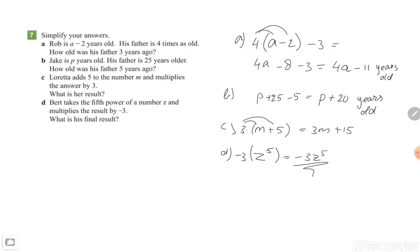So start always with the number, in this case the letter where you need to start with. For example, with exercise 7a we started with a minus 2. In exercise 7b we started with p. With exercise c we started with the number m. And at exercise d we started with number z. All right, good luck.